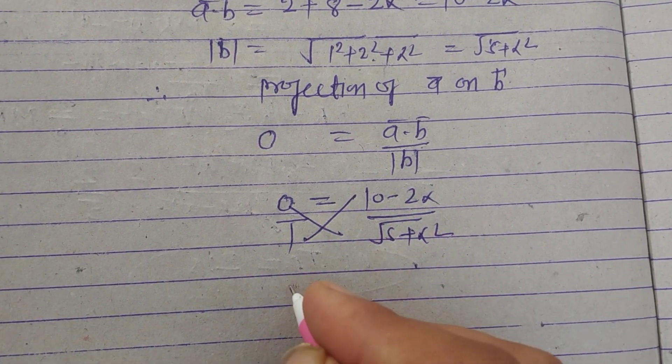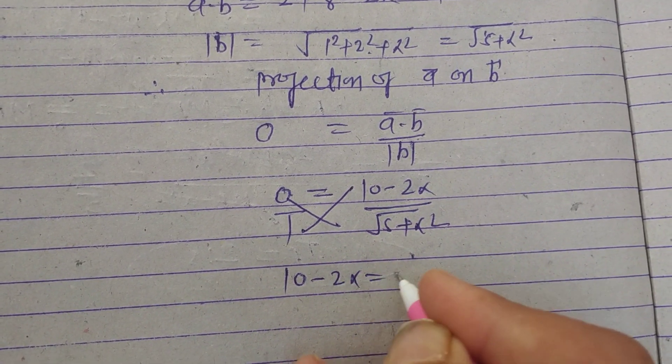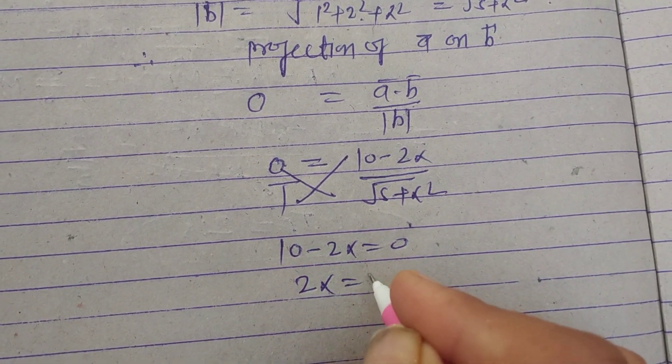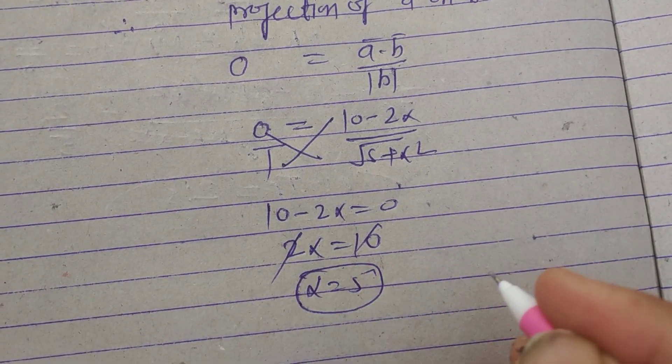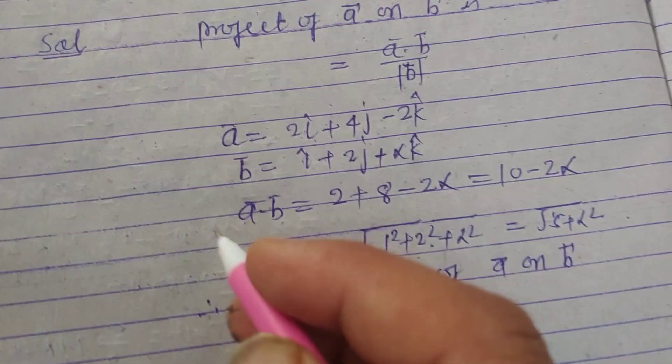So on cross multiplication we get 10 minus 2 alpha equals zero, or 2 alpha equals 10, alpha equals 5. So the value of alpha is 5.